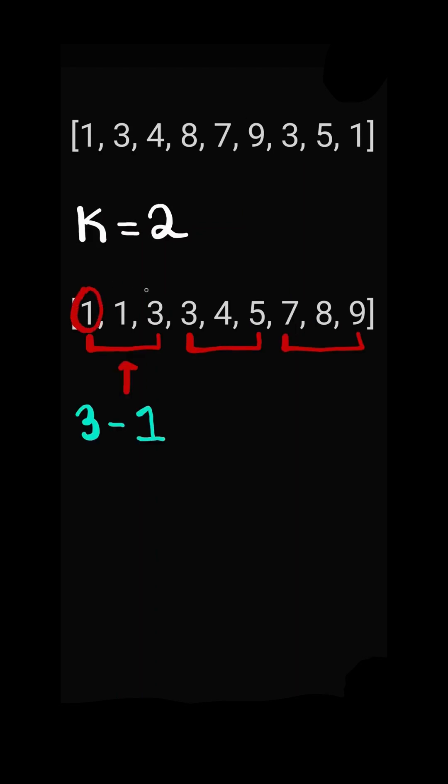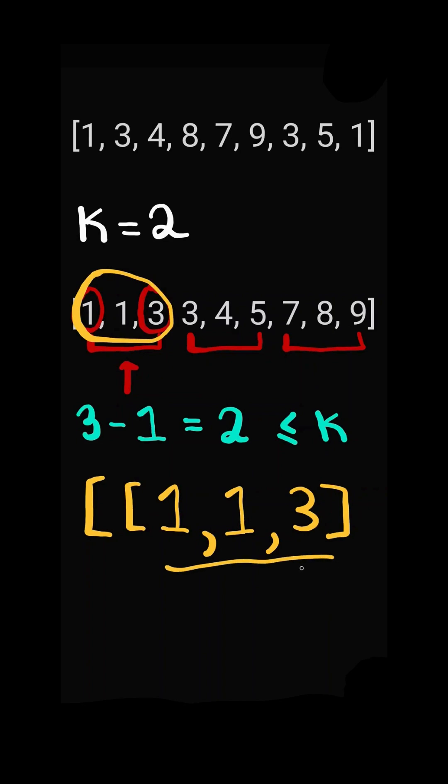If the difference between the first and the last number is less than or equal to k, then we add the subarray to our result. And we continue.